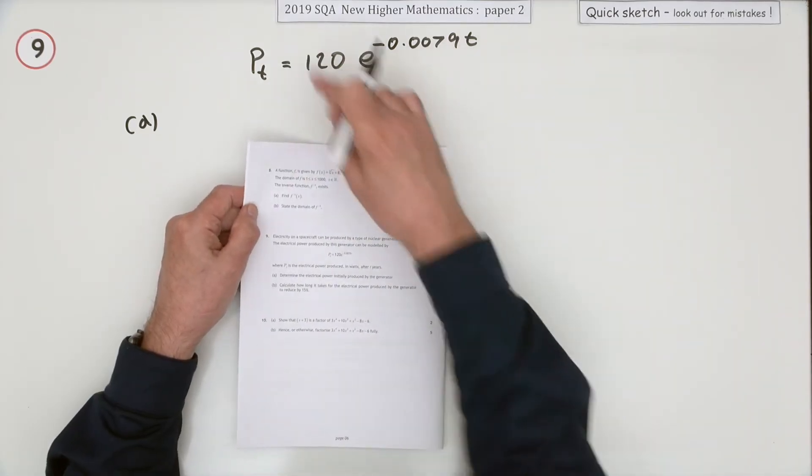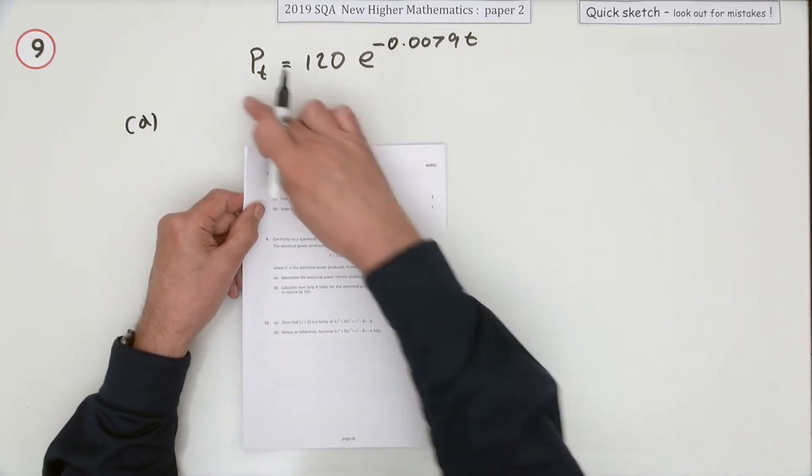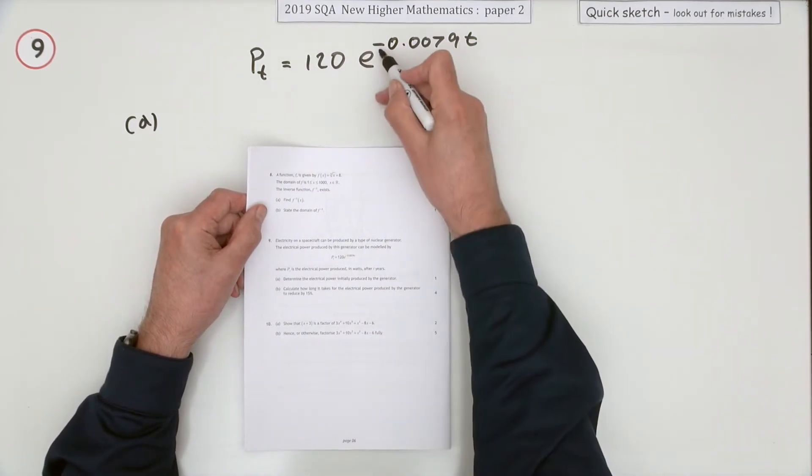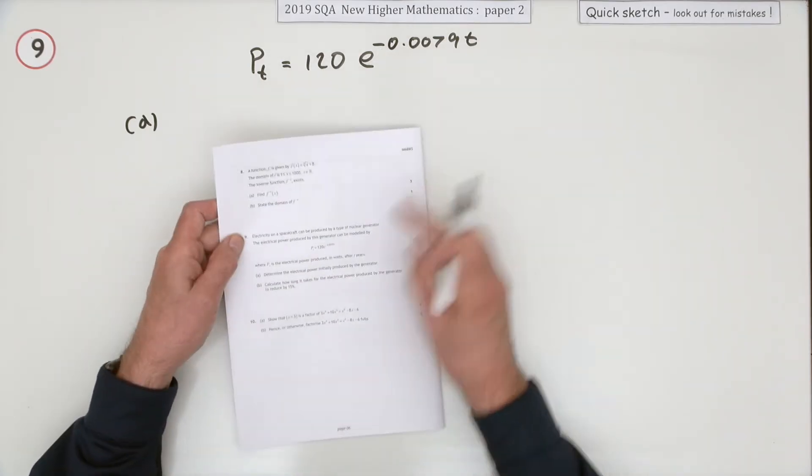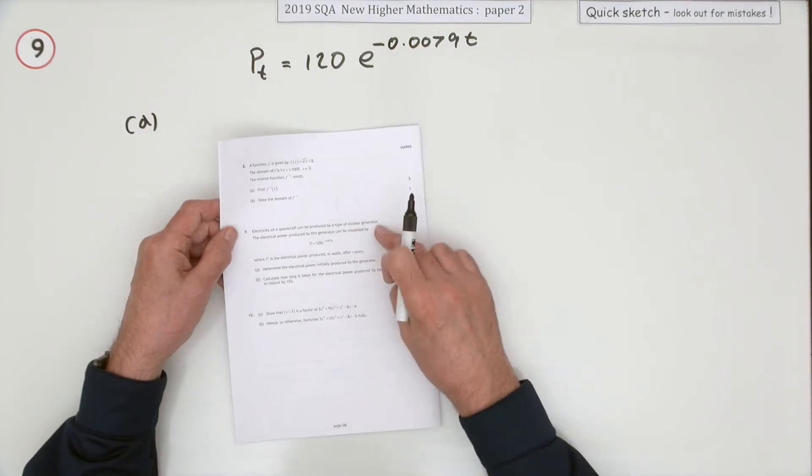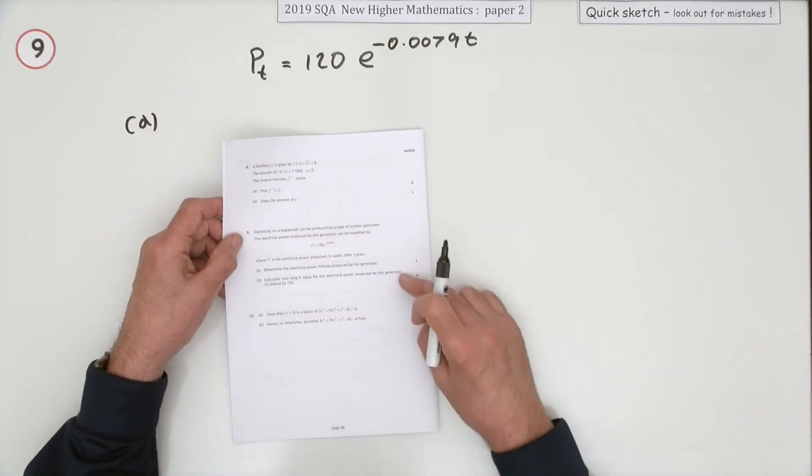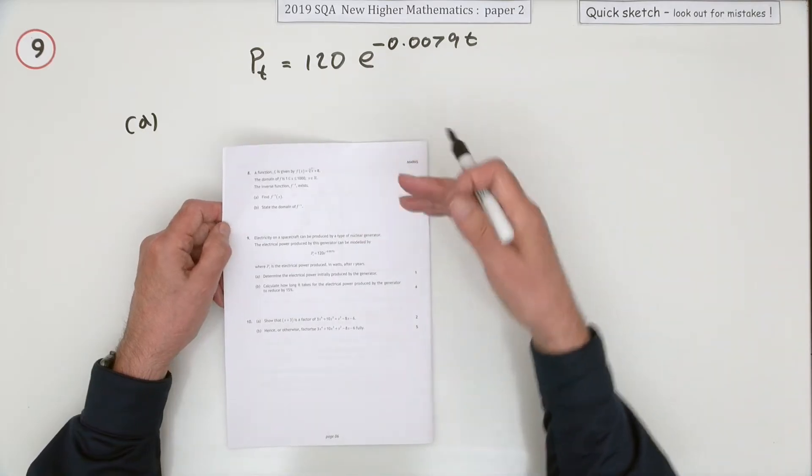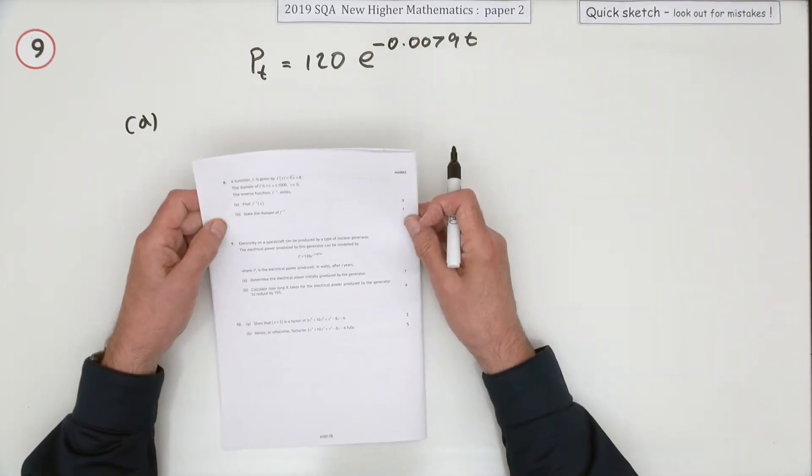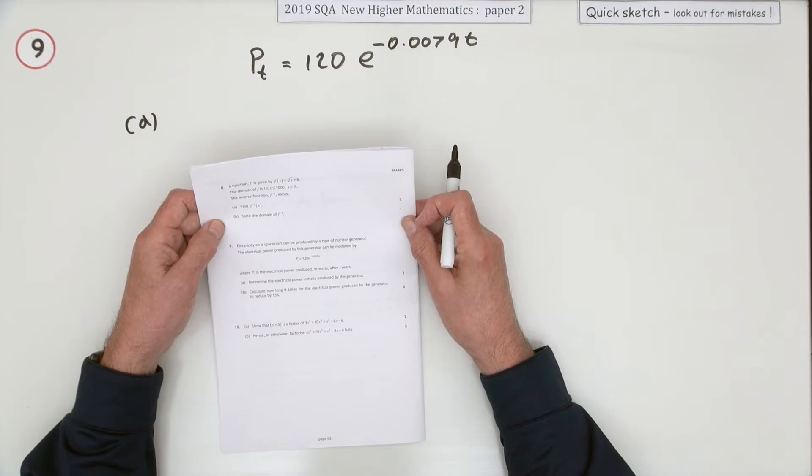Number nine from paper two of the 2019 Higher Maths: an exponential equation. You can see from the negative there and the index it's a decay equation. What you've got here is a nuclear generator producing electrical power according to this formula, so it decays. The first question says determine the electrical power initially produced.